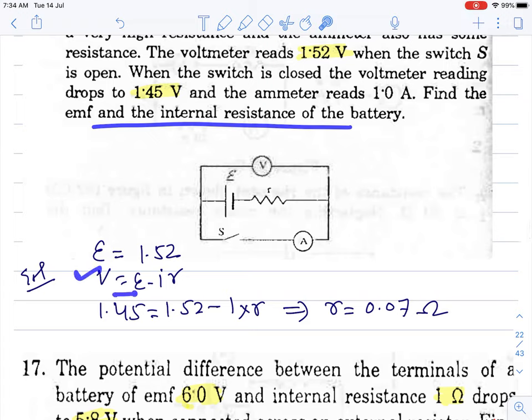During discharging, V equals E minus IR. V is 1.45 and E is 1.52 when the switch is off. The EMF is shown. After putting values and solving, the value of R is 0.07 ohm.